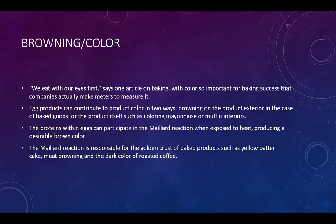Browning or color: when we eat, we eat with our eyes first. Color is so important for baking success that companies actually make meters to measure it. Egg products can contribute to product color in two ways: browning on the product exterior in the case of baked goods, or coloring the product itself such as mayonnaise or muffin interiors. The proteins within eggs can participate in the Maillard reaction when exposed to heat, producing a desirable brown color. The Maillard reaction is responsible for the golden crust of baked products such as yellow butter cake, meat browning, and the dark color of roasted coffee.